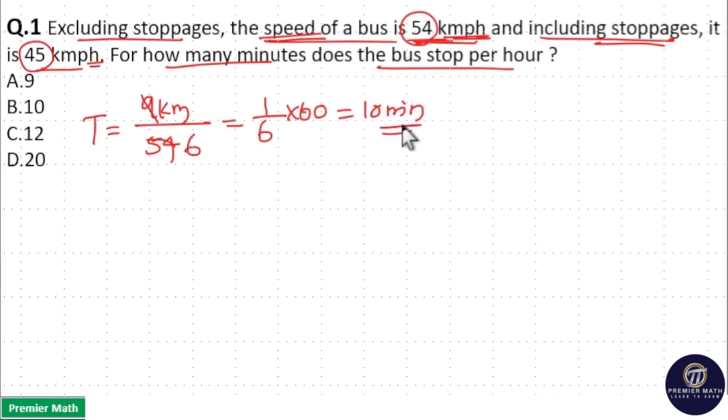Which means here in 10 minutes, this extra 9 kilometers is covered by this higher speed bus. So in that 10 minutes, this lower speed covers all these stoppages. So option B is your answer.